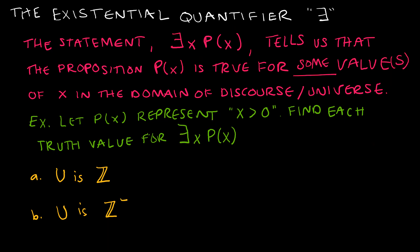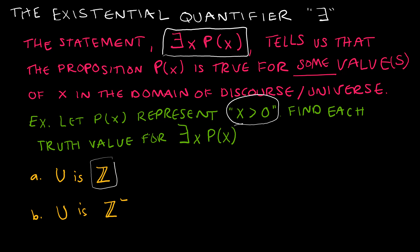Let's now look at the existential quantifier. The statement 'there exists some x such that p of x' tells us that the proposition p of x must be true for some value or values of x in the domain of discourse. For the universe of integers using p of x as x is greater than 0: can I find some integer that is greater than 0? Let's use 7. 7 is an integer, and '7 is greater than 0' is true. All I need for the existential is to find one value that makes it true, so this is true.